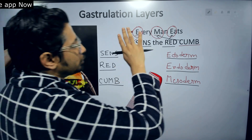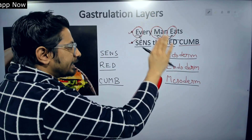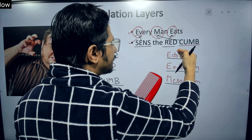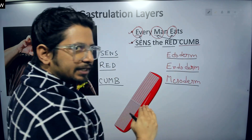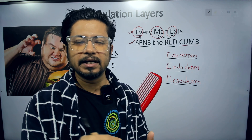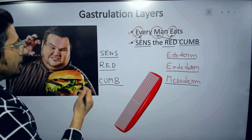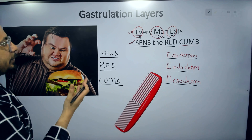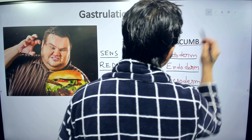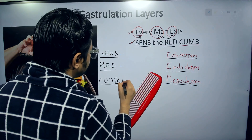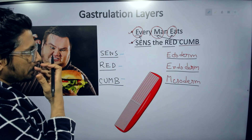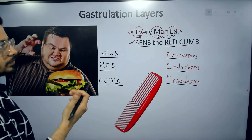You just need to arrange them as ectoderm, then endoderm, then mesoderm. Do not arrange ectoderm, mesoderm, endoderm. Although mesoderm is the middle layer, ectoderm is the outer layer, and endoderm is the inner layer — remember that. Ecto means outer, endo means inner, and whatever is in the middle is mesoderm. These words — SENS, RED, and CUMB — have different letters, and these letters dictate the different systems generated or originated from the different layers of gastrulation.